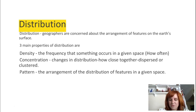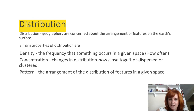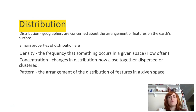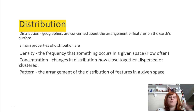Now we're switching to some spatial vocabulary from that orangey goldenrod sheet. Distribution has to do with how things are arranged on Earth's surface. The three things we look at when talking about distribution are density, concentration, and pattern. Density has to do with how frequently something is occurring. Concentration has to do with how close together those objects are. And pattern has to do with the way in which those objects are arranged.